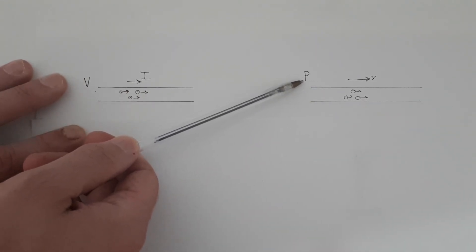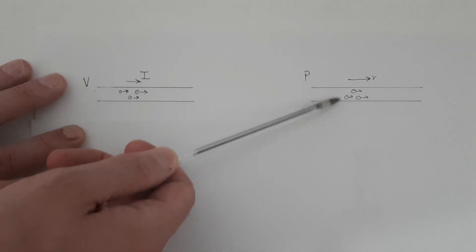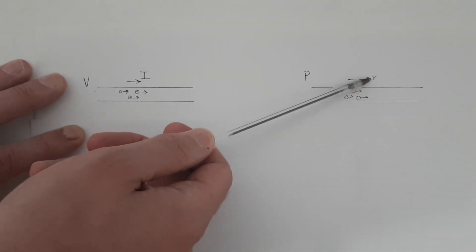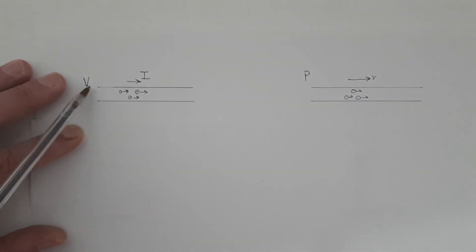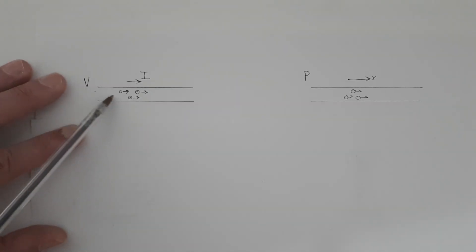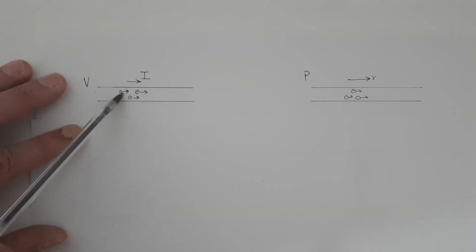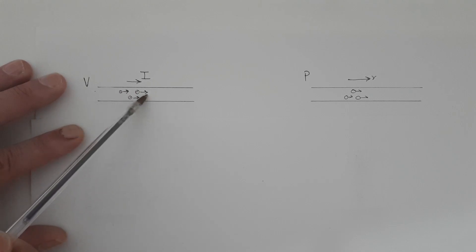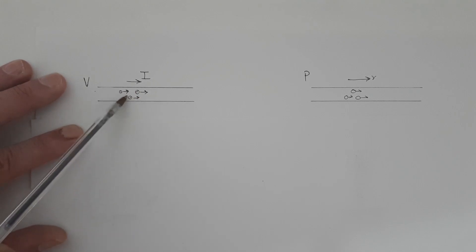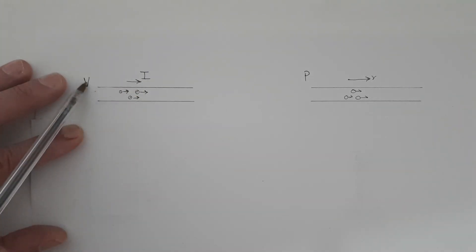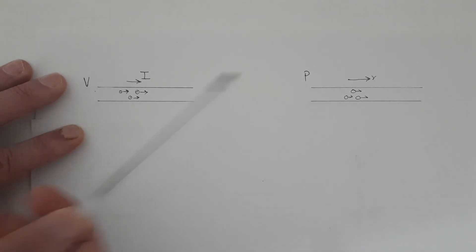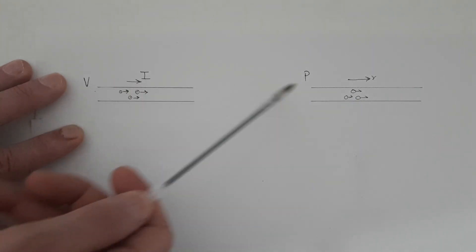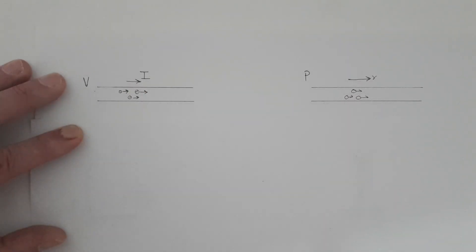When I apply a pressure P to the pipe, it makes the gas molecules in the pipe move with a velocity V. That's the same as when I apply a voltage to the end of a wire — it puts a force on the electrons and makes those electrons move. The movement of those electrons we call current. So in this analogy, voltage is exactly like a pressure, and current is exactly analogous to the velocity of the movement of molecules.